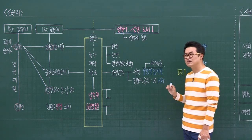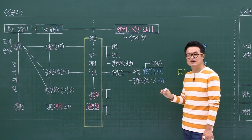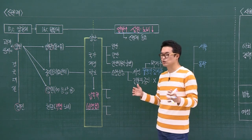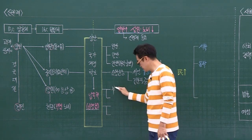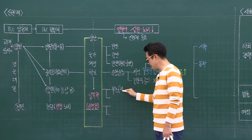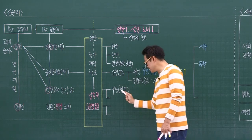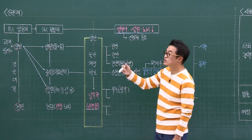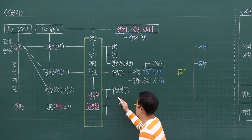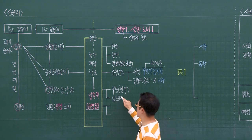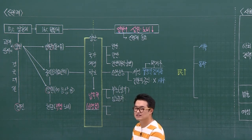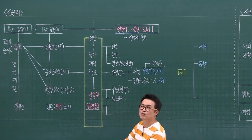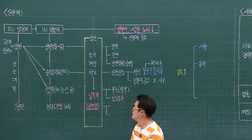조선 후기는 양반, 중인, 상민, 천민이라고 하는 틀이 흔들리고 있는 모습입니다. 상민들을 한번 볼게요. 모내기법이 일반화되면서 돈을 좀 많이 벌었던 사람들, 경영형 분홍이라고도 하는 광작경영을 통해 돈을 버는 사람들이 있어요. 다섯 명이 할 일을 한 명이 하면서 그 한 명은 부농이 되었고, 나머지 네 명은 토지에서 떨어져 나와 임노동자가 됩니다. 자본의 조건은 자본과 노동이라고 설명드렸습니다.